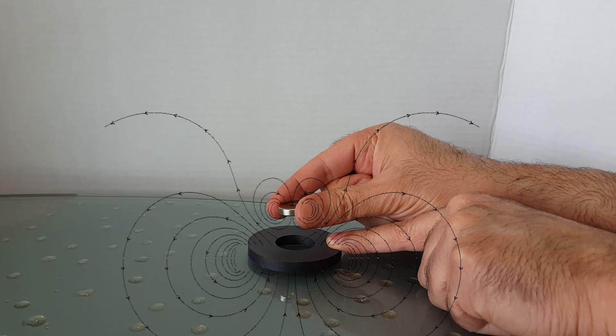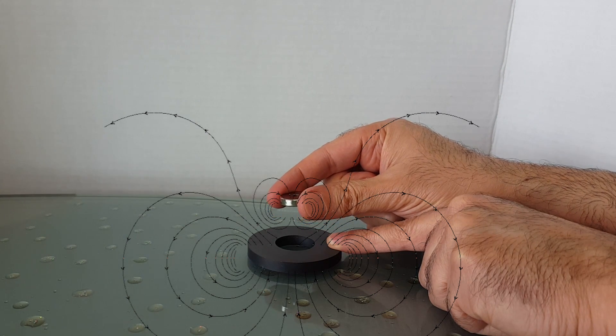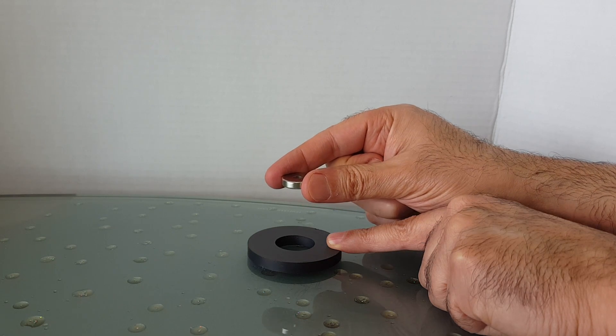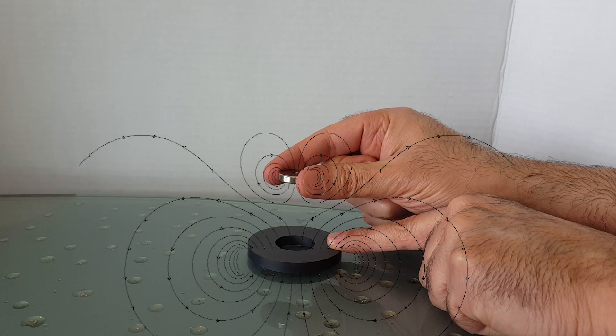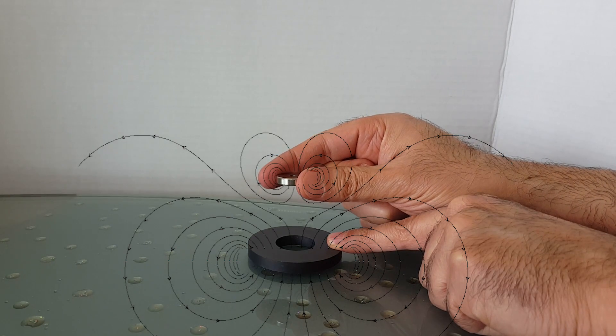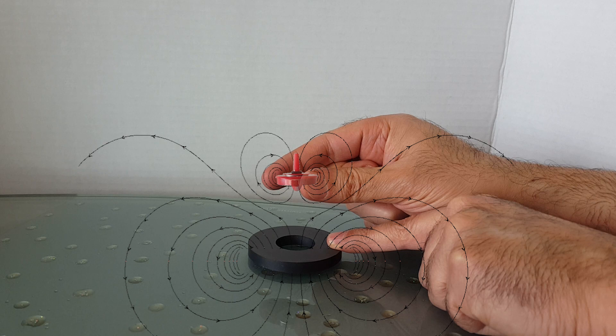Right about here, the repelling force is really strong. The smaller magnet is really being pushed upwards. And right about here, I feel the balance between the weight of the magnet and repelling forces. The rest of it is just the plastic structure to make it a gyroscopic spinner.